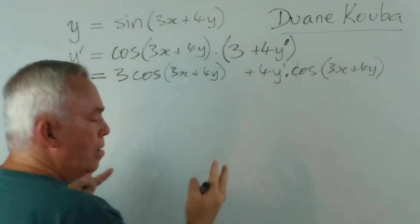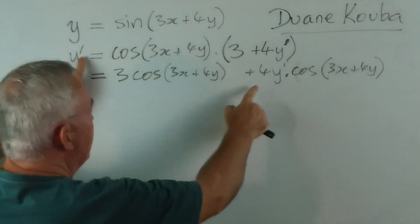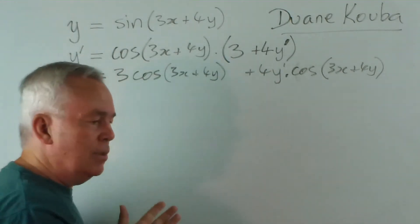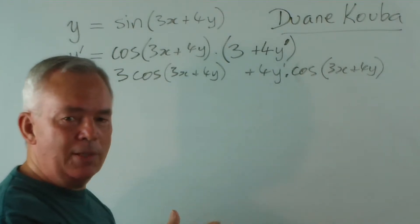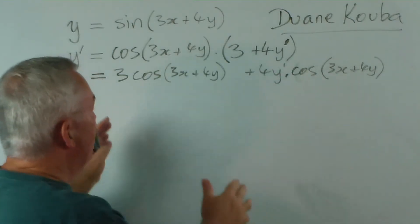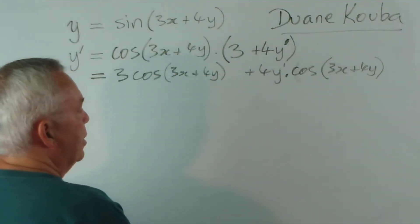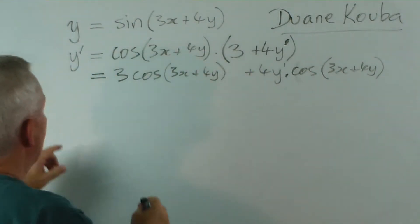Now, the beauty of finding derivatives implicitly is that y dash is only there as a single power. You never get squares or square roots or cubes of them. You simply get a linear equation in y dash. So it's quite easy, generally, to collect like terms and so forth.